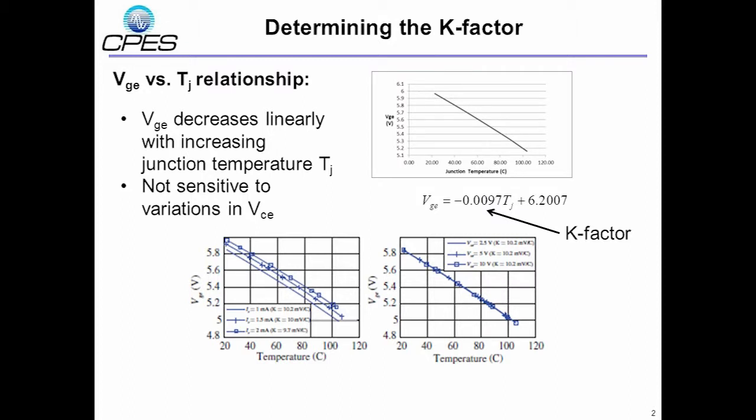Now, the relationship between junction temperature and the VGE has to be known before power cycling. This relationship is linear and is given in terms of the K factor. As we see in these figures, this linear relationship remains constant for a given device current.